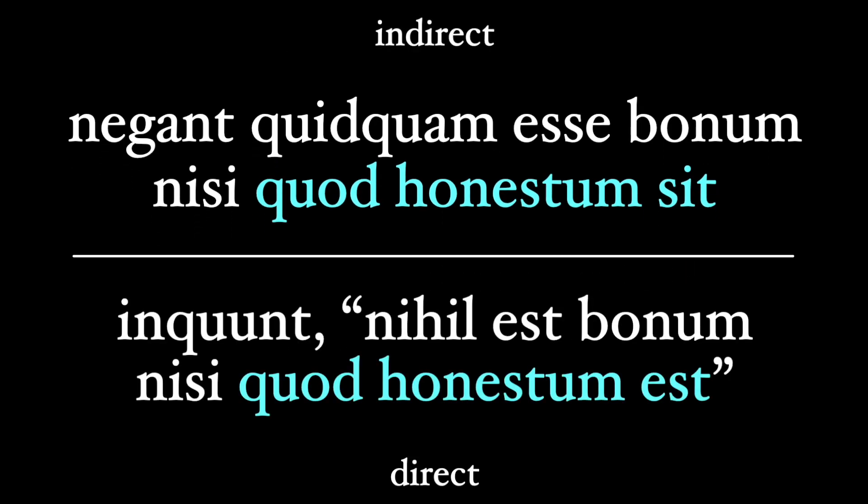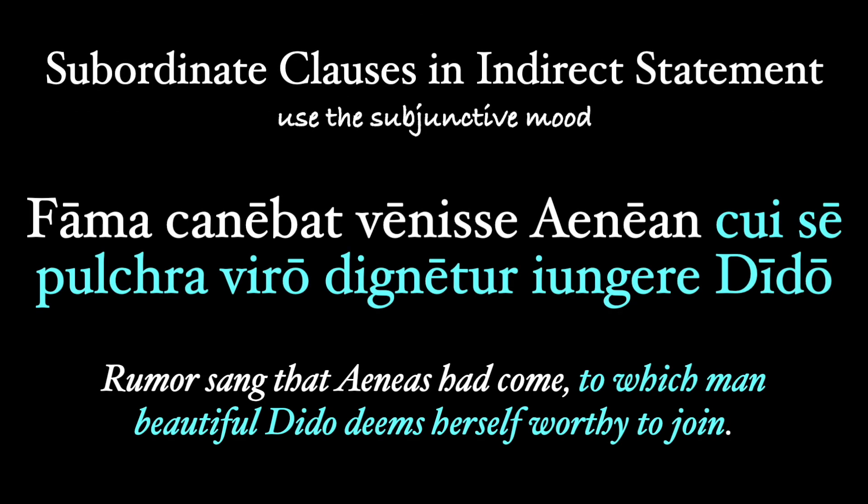Let's compare: in direct form, "Inqunt... nihil est bonum, nisi quod honestum est." When we put it into an indirect statement, the est in the relative clause becomes the subjunctive sit. Similarly, in Virgil's Aeneid, Fama (the monster Rumor) sang — canebat, our head verb — that Aeneas had come: "venisse Aenean." Then follows a relative clause with its verb in the subjunctive: "qui se pulchra viro dignatur iungere Dido" — to which man beautiful Dido deems herself worthy to join. Dignatur is in the present subjunctive because it is the verb of a relative clause inside an indirect statement.